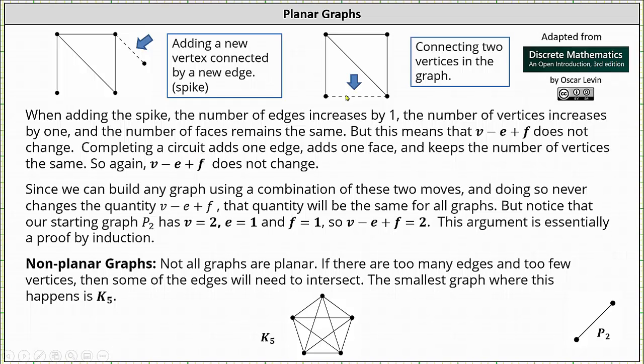Completing a circuit by adding an edge connecting two existing vertices adds one edge, adds one face, and keeps the number of vertices the same. Well, if we increase the number of edges by one and increase the number of faces by one, since negative one plus one is zero, V minus E plus F does not change.